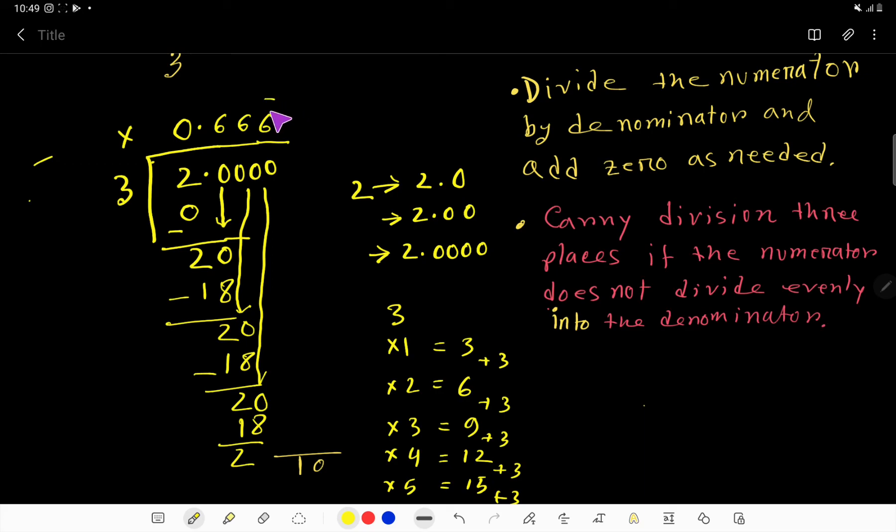This means that this number 6 is repeating. This is a non-terminating and recurring decimal number.